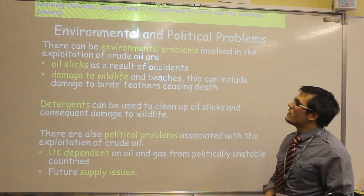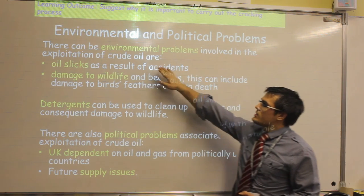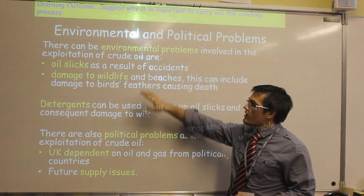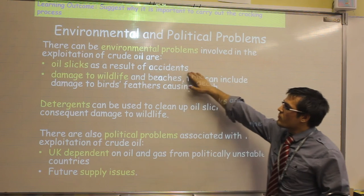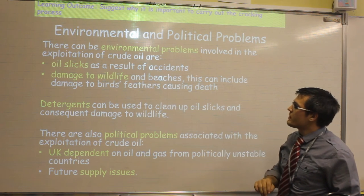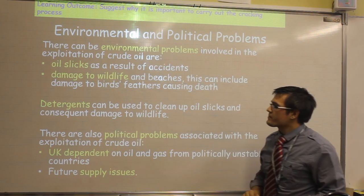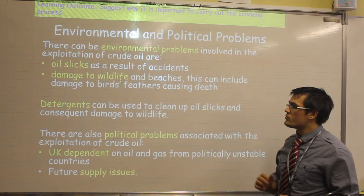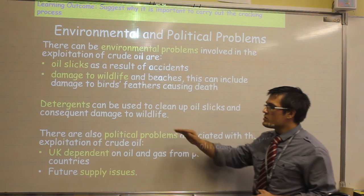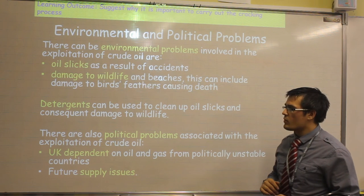The final part of this topic is to discuss the environmental implications. There can be environmental problems associated with the exploitation of crude oil. If oil slicks result, this can cause intense damage to wildlife and to beaches. That can include damage to birds' feathers and to fish. If this does happen, it is incredibly difficult to remove and to clean. Detergents can be used in order to clean up oil slicks and the consequent damage to wildlife.